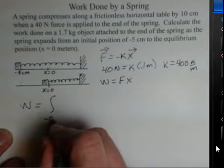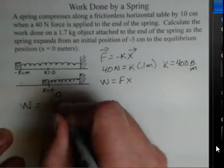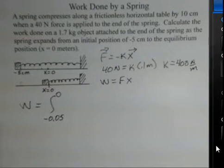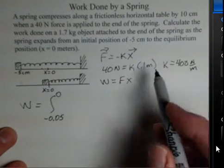Our lower limit is where we start. So 5 centimeters would be 0.05 meters. I want to do this in standard metric units. And our ending limit, we want to end up at the equilibrium position. Our force is minus 400x.